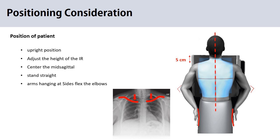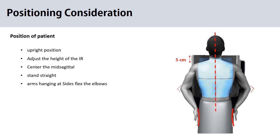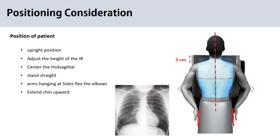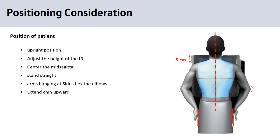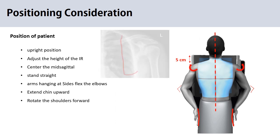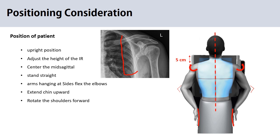This movement will position the clavicle just below the apex of the lung so they will be visible to evaluate. Then ask the patient to extend the chin to avoid mandible superimposition on the chest region. Finally, rotate the shoulders forward so the scapula will rotate outward and laterally to reduce scapula superimposition with the lungs.